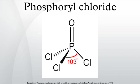Chemical properties: POCl3 reacts with water and alcohols to give hydrogen chloride and phosphoric acid or phosphate esters, respectively: O=PCl3 + 3H2O → O=P(OH)3 + 3HCl. If the water is replaced by an alcohol, trialkyl phosphate esters result. Such reactions are often performed in the presence of an HCl acceptor such as pyridine or an amine.